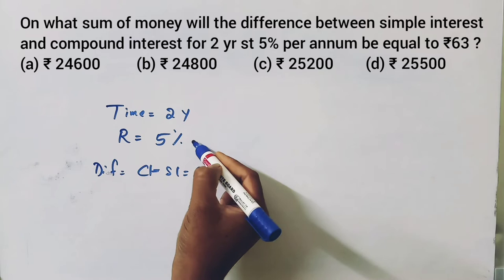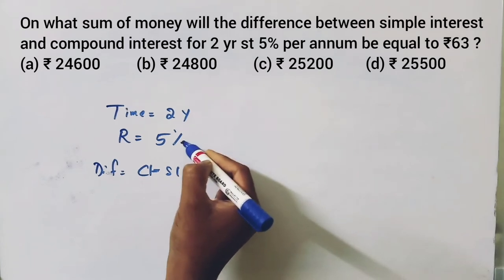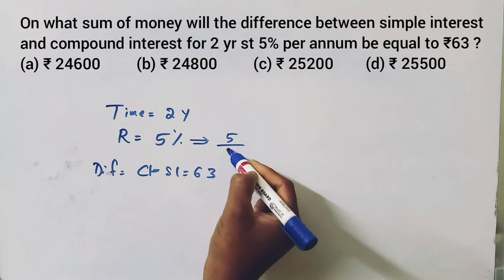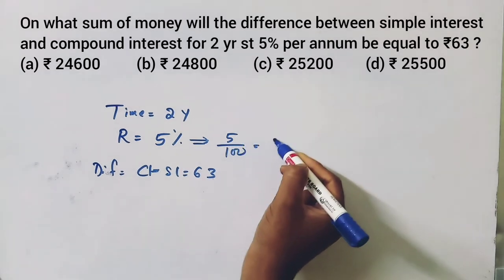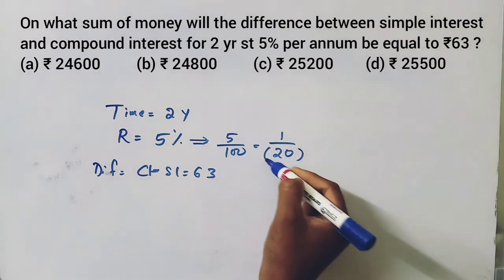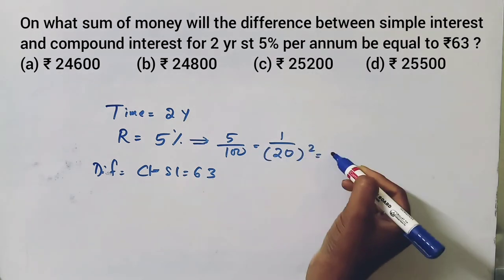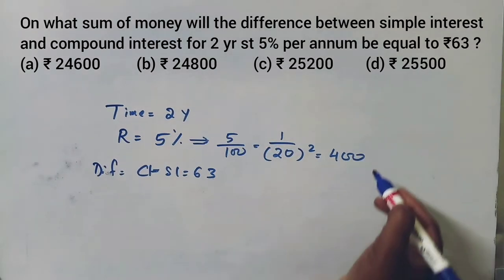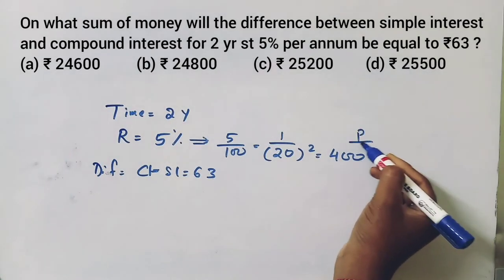5% equal to, 5 by 100, 1 by 20. 100, P is the principal.